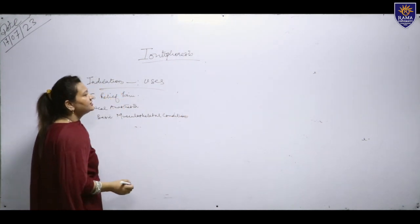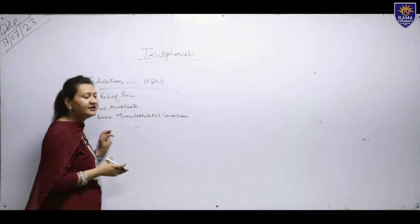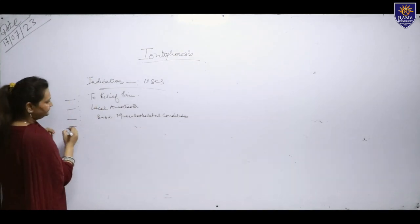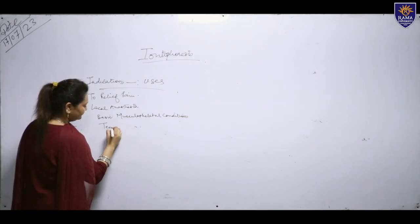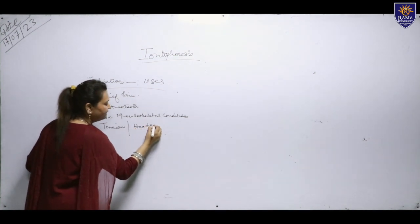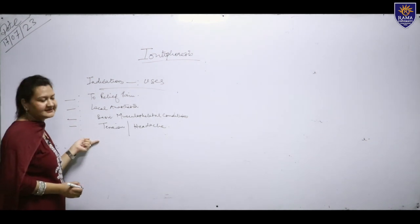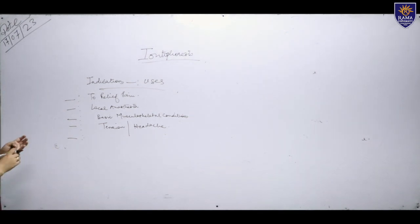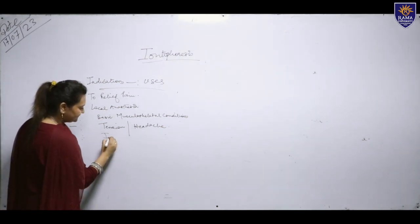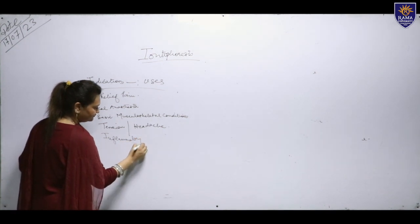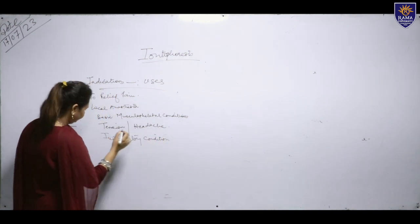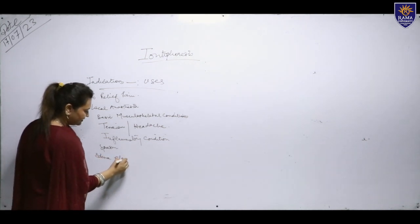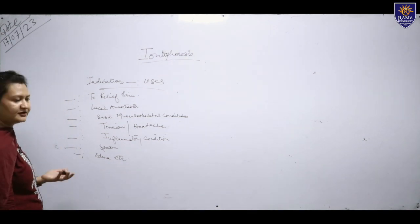Next are basic musculoskeletal conditions, comprising all conditions generated due to muscles, ligaments, tendons or connective tissues. Next, we have tension and oblique headache — we can always go for iontophoresis if conditions like tension or headache prevail. Other uses include inflammatory conditions, spasm, edema, etc. These are the basic conditions for which we can use iontophoresis.